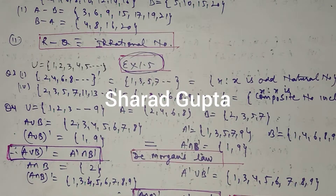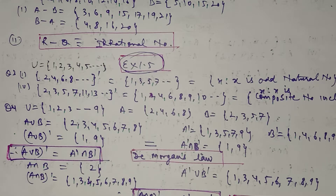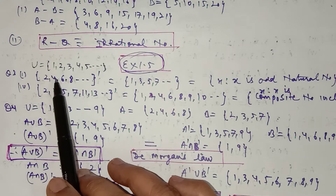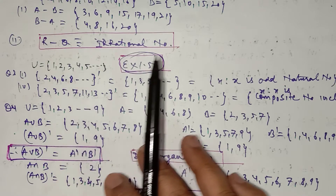Hello, this is lecture number 6 for the chapter Sets of Class 11th and we are starting with Exercise 1.5, in which we have to find the complements of the given sets. We have discussed in the basics of this chapter how to find complements of sets. I am taking question number 3 of this exercise. Because the question is given in set builder form, when you have to find the complement or intersection, you have to first convert into roster form. To find the complement of a set, we must have the universal set.